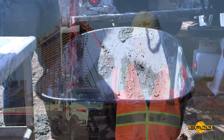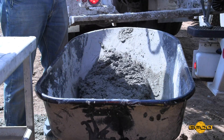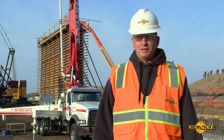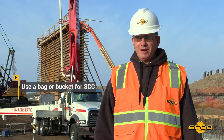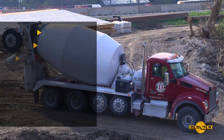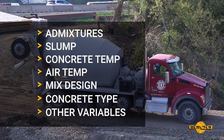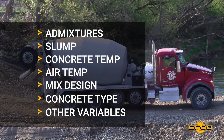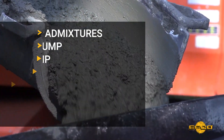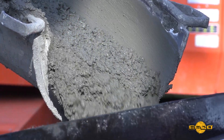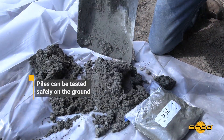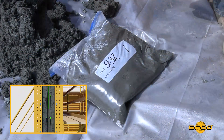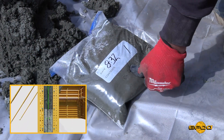The set rate chart is based on collecting test piles of concrete from each truck and recording the time and height of the lift inside the form. The set rate chart method is good for every type of concrete and is independent of admixtures, slump, concrete temperature, air temperature, mix design, concrete type, and any other variable. The same concrete going into the wall is the same concrete being collected for the test piles. In addition, the test piles can be tested safely on the ground as opposed to trying to handle a 20-foot piece of rebar up in the air on the scaffold to test the firmness of the concrete.